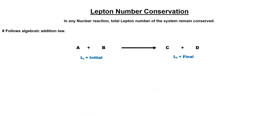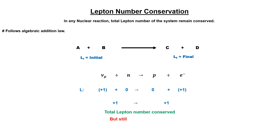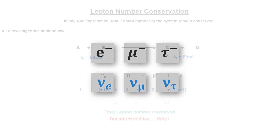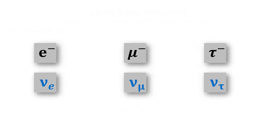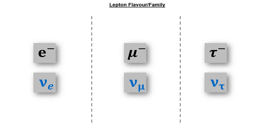After the discovery of lepton number conservation, some reactions were predicted in which the lepton number is conserved but the reaction is still not allowed — like muon neutrino and neutron decaying into electron and proton. This reaction has neutrino and electron as lepton particles with lepton number +1, while neutron and proton are non-leptonic. So even though the total lepton number is conserved, this reaction is not allowed. To resolve this, lepton particles were divided into lepton flavours or lepton families.